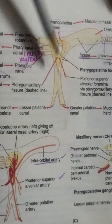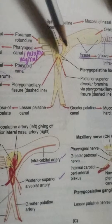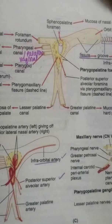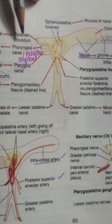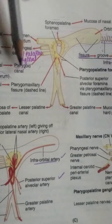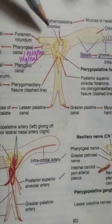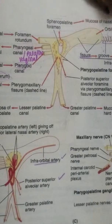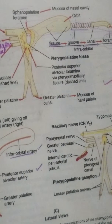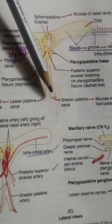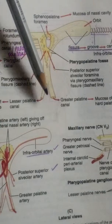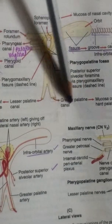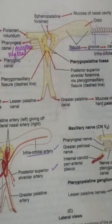This is the pterygopalatine fossa. Anteriorly it communicates with the orbit through the inferior orbital fissure, and posteriorly with the foramen rotundum, the pharyngeal canal, and the pterygoid canal. Medially it communicates with the sphenopalatine foramen, connecting it to the nasal region. Inferiorly it communicates with the greater and lesser palatine canals — the greater palatine canal leads to the hard palate and the lesser palatine canal leads to the soft palate.